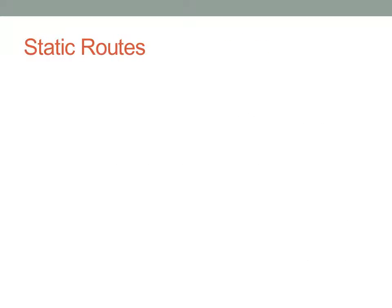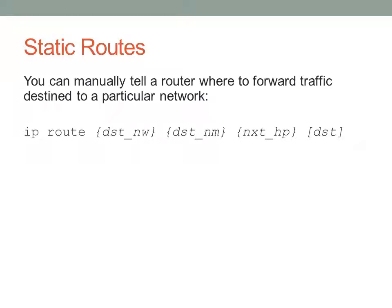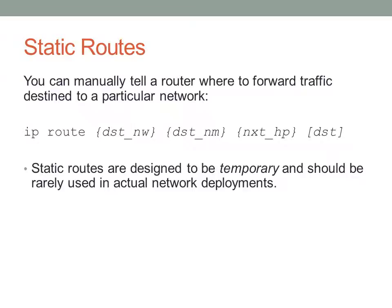The next type of route we're going to talk about are static routes. These are routes that are added by you to tell a router where to find an individual network. These are nice as band-aids. The syntax is: IP route, then the destination network, the destination subnet mask, and the next hop. There's an optional parameter at the end for administrative distance - you can actually specify in a static route what the administrative distance is. This is very useful if you want a static route to take over when a routing protocol fails, or if you want a static route to take precedence over a routing protocol. Static routes are basically designed to be temporary things because static routes only provide one-way connectivity.